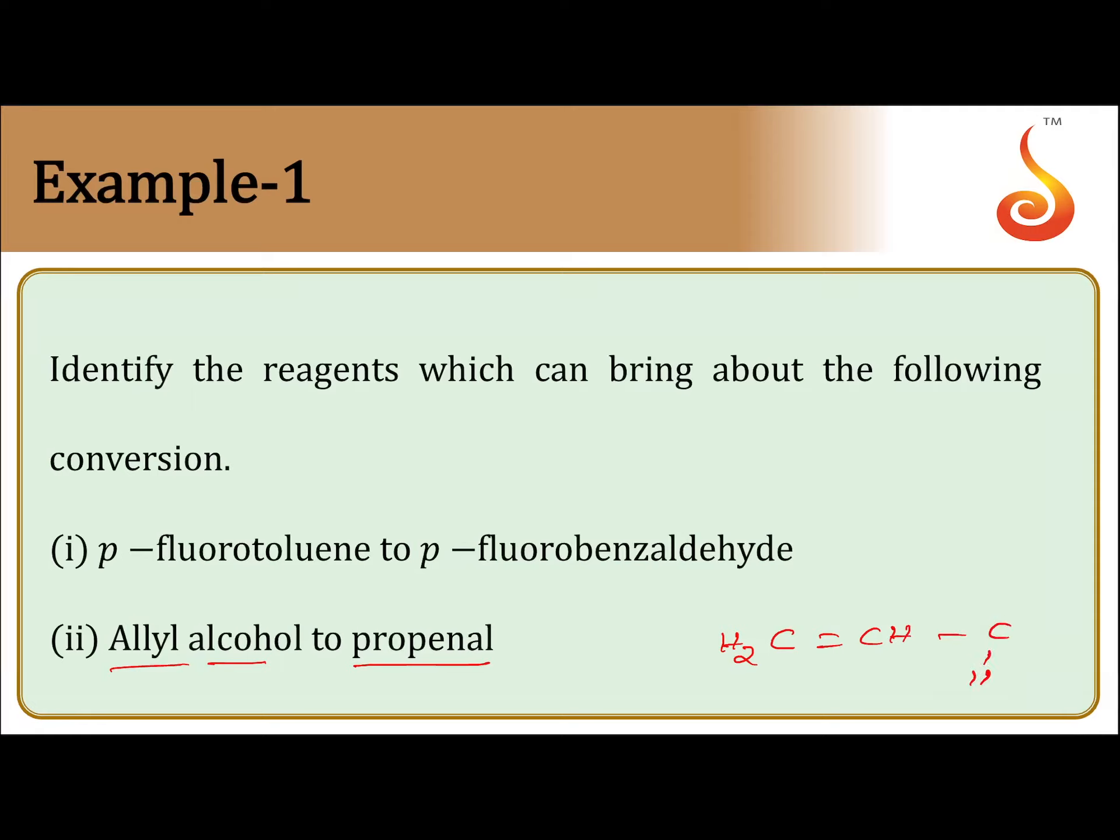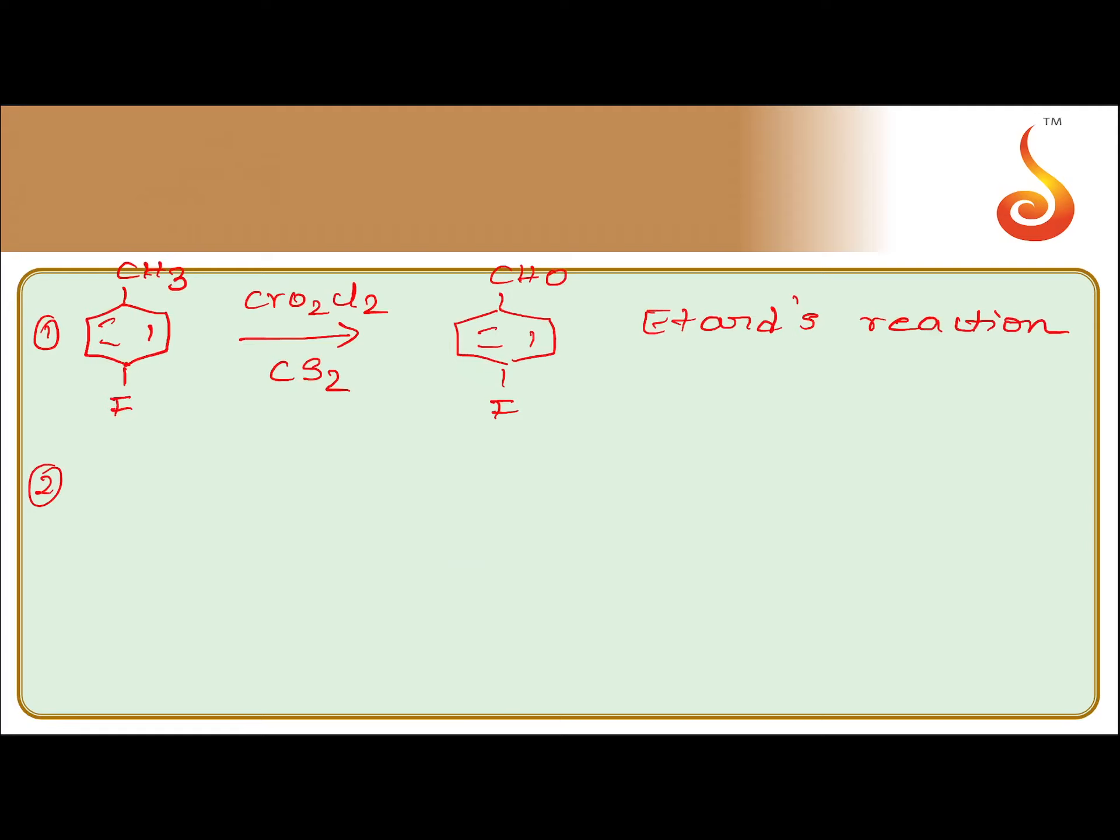CH2 double bond CH CHO. This is propenal. So what is allyl alcohol? CH2 double bond CH CH2 OH.